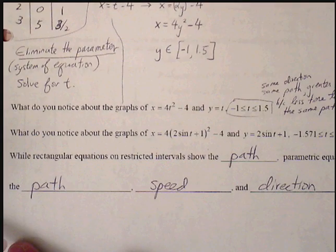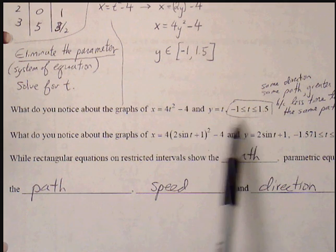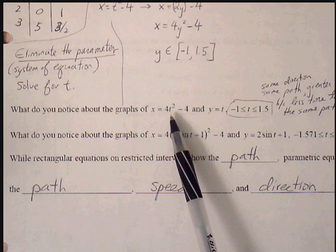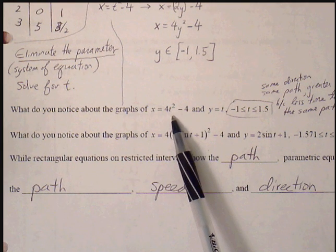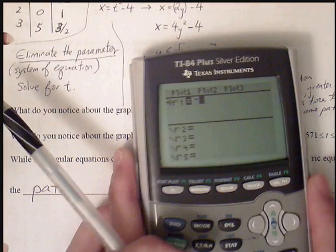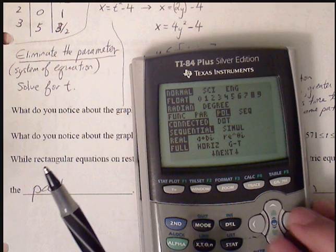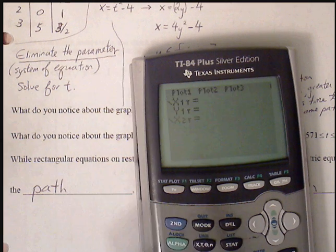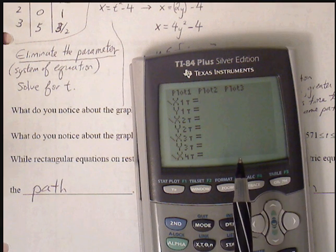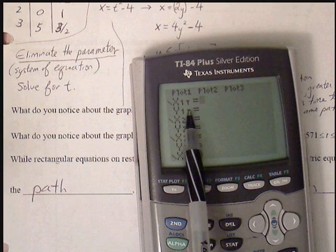So what do we notice about this graph here? And if we plug this in our calculator here, you'll want to make sure that you are in parametric mode when you enter this in your calculator. So in your calculator, you simply go to mode and select PAR for parametric, and then you'll get your first set of parametric equations in terms of x as x equals and the second one as y equals.